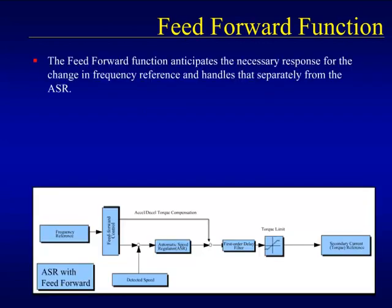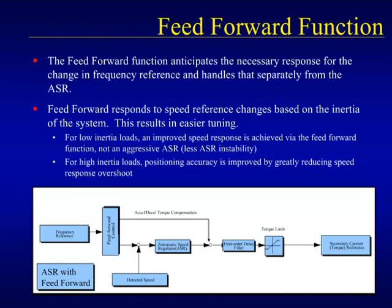The feed forward function will isolate the ASR's reaction to motor speed errors caused by a frequency reference change from the reactions to motor speed errors caused by load changes. By separating the two sources of motor speed errors, the feed forward can more effectively compensate for the errors without the use of overly aggressive ASR gains. How the feed forward function calculates the amount of compensation is based on motor inertia and the inertia of the load. Feed forward will improve the speed profile of a low inertia system without the instability of an aggressive ASR, and will also make positioning of higher inertia systems more accurate by eliminating frequency response overshoot.